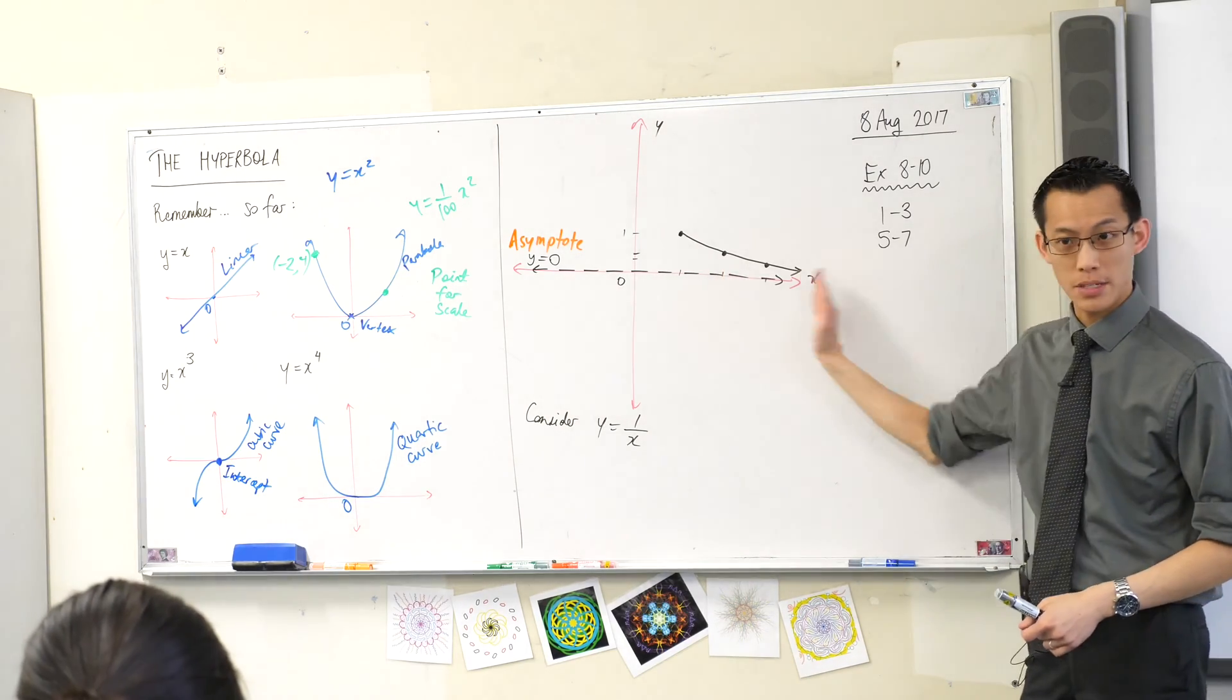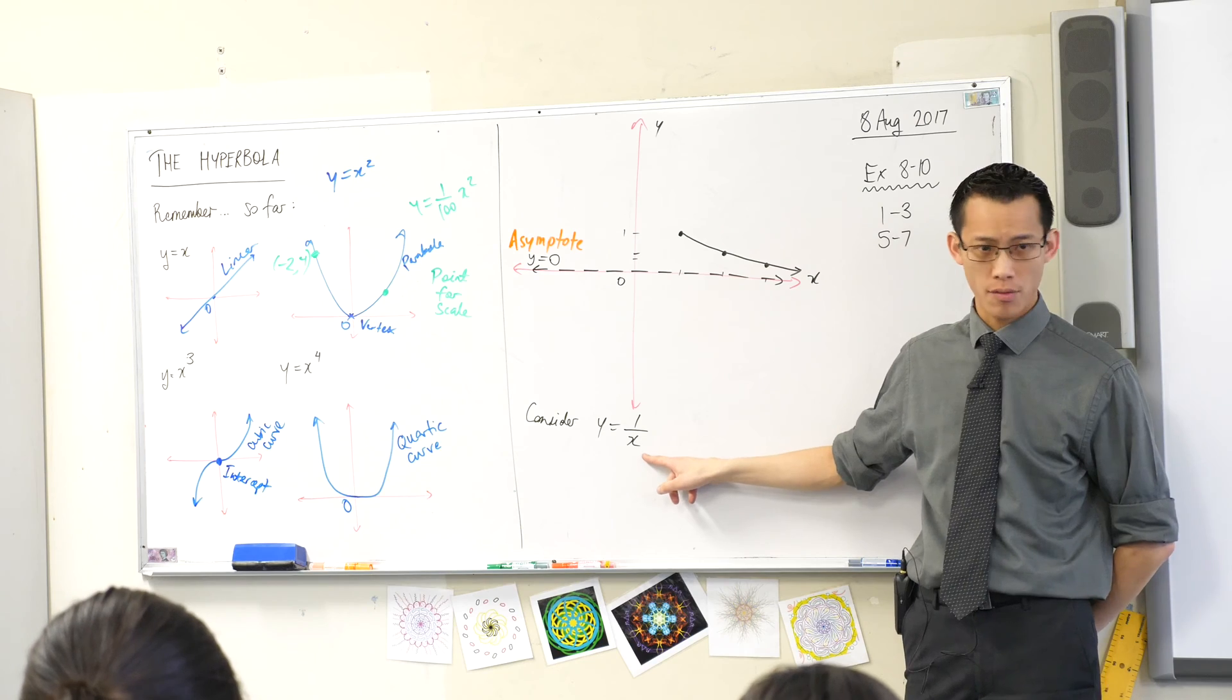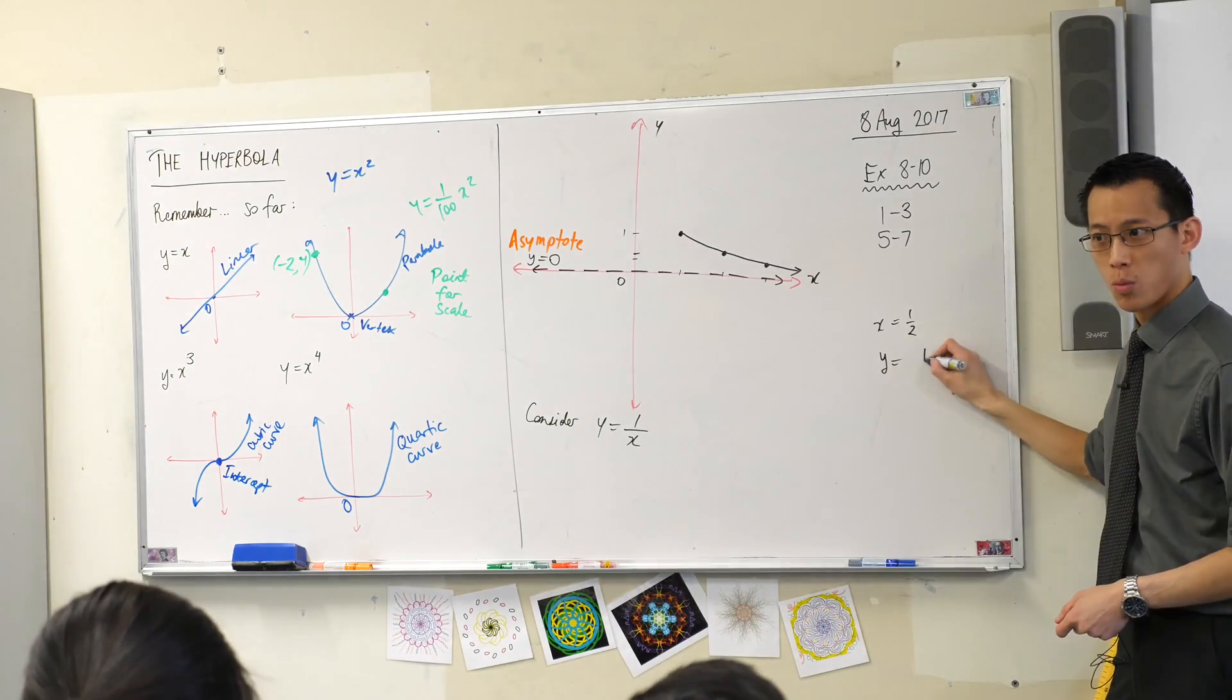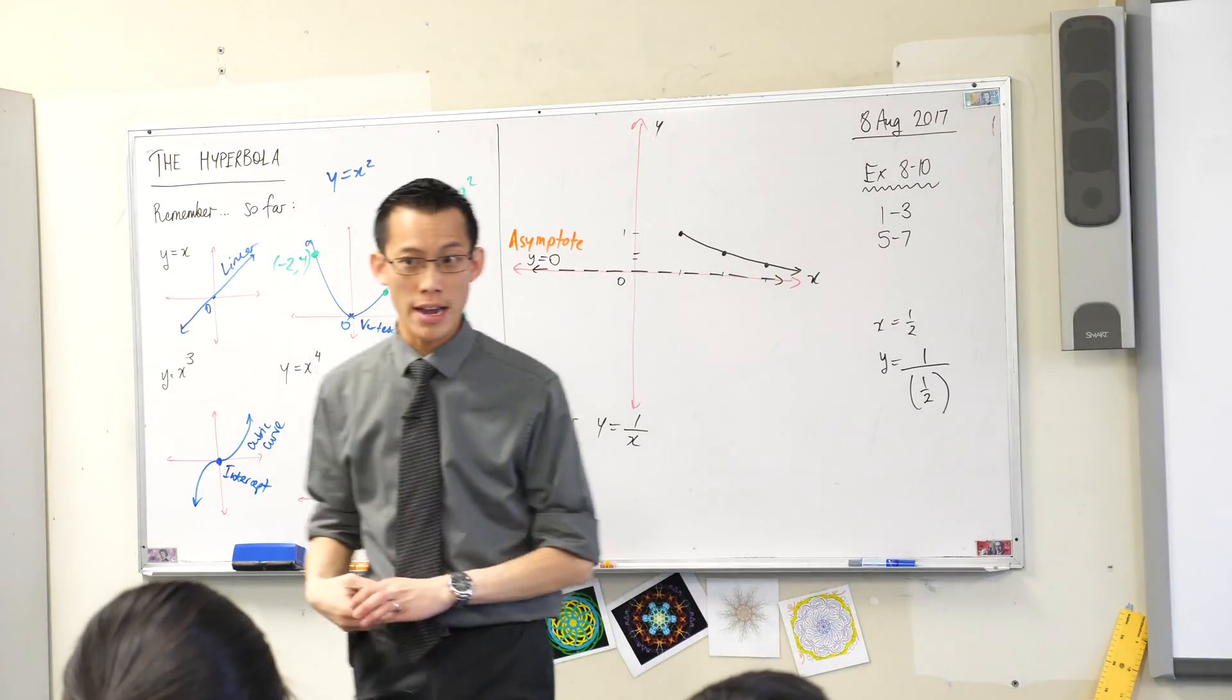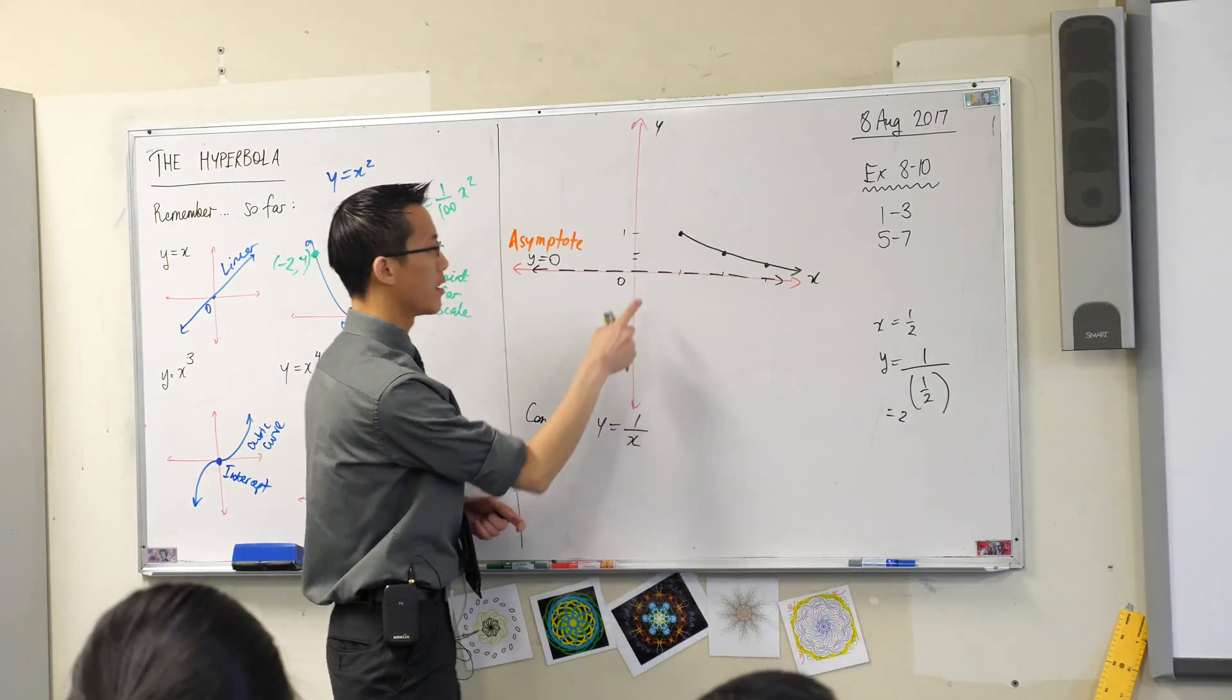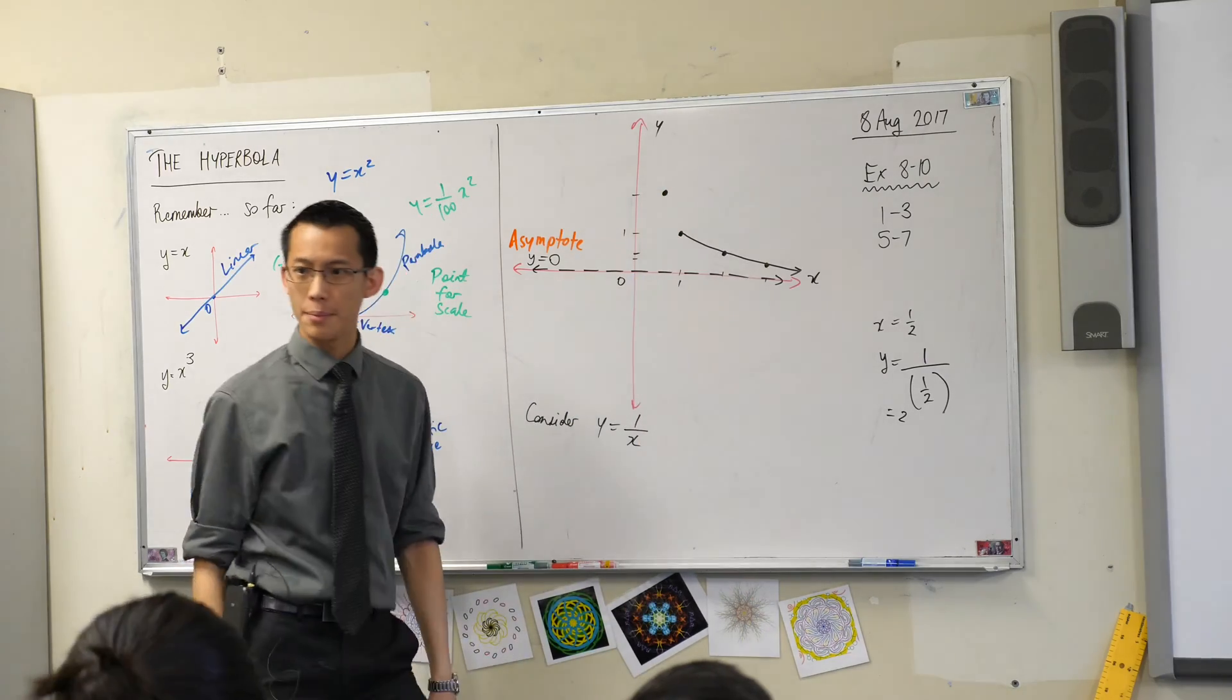Now we were just plugging some numbers in here. What happens to the left? What if x were, say, a half? What would y equal? If x is a half, then y is equal to one over a half. What is that? That's two. In fact, this thing just takes the reciprocal every time. So y is going to be equal to two. So x equals a half is here, so y equals two will be up here, like that.